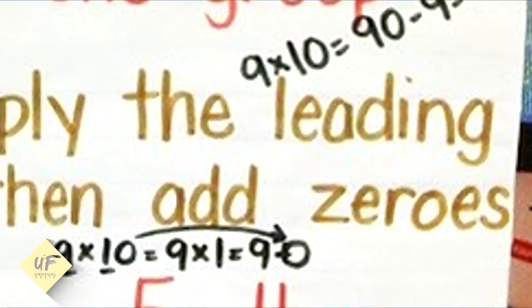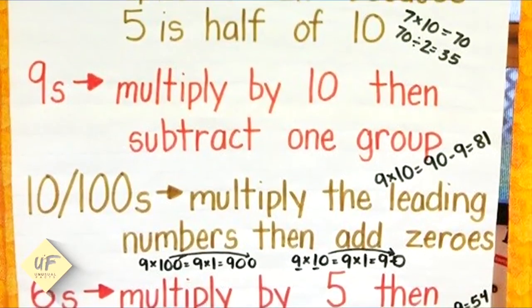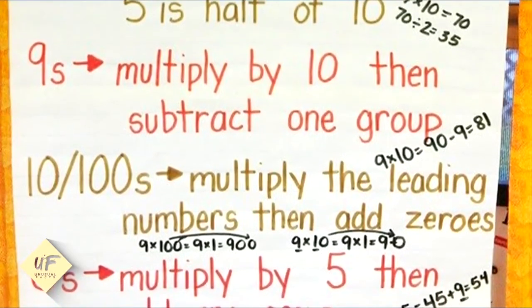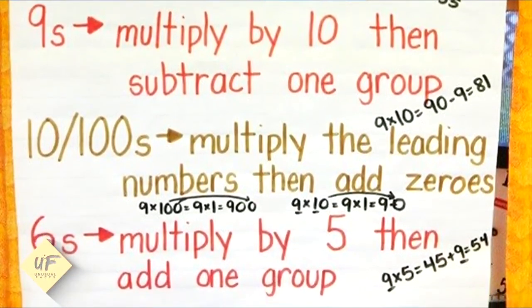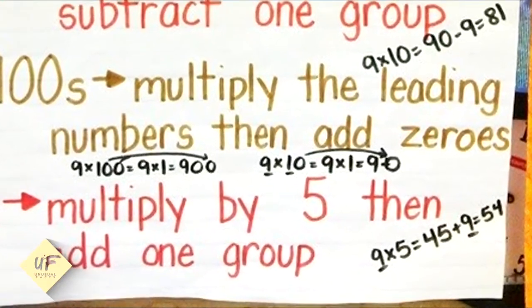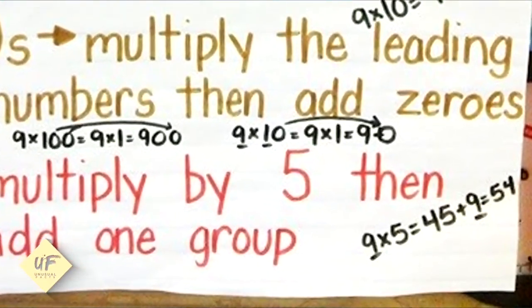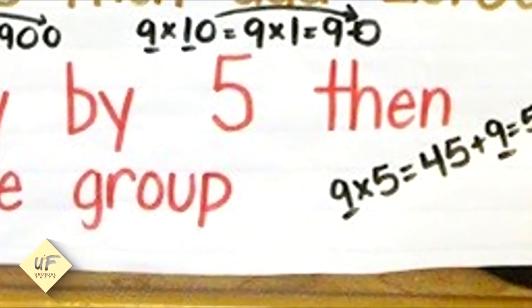Sixes: multiply by five, then add one group. Nine times five equals 45, plus nine equals 54. Maybe you find it easier to use one of these strategies instead of just doing it the good old-fashioned way.